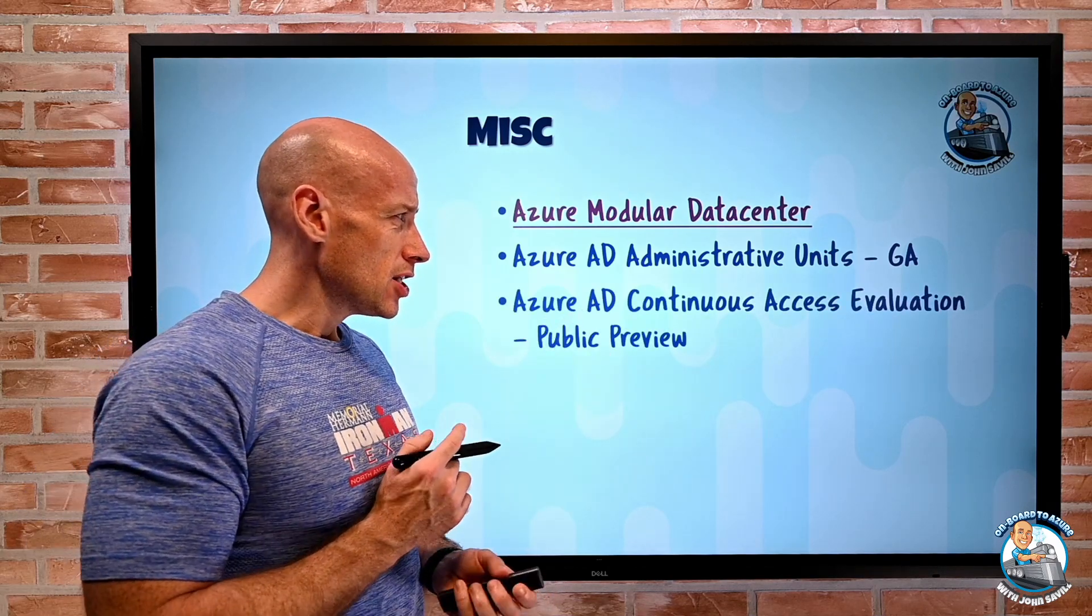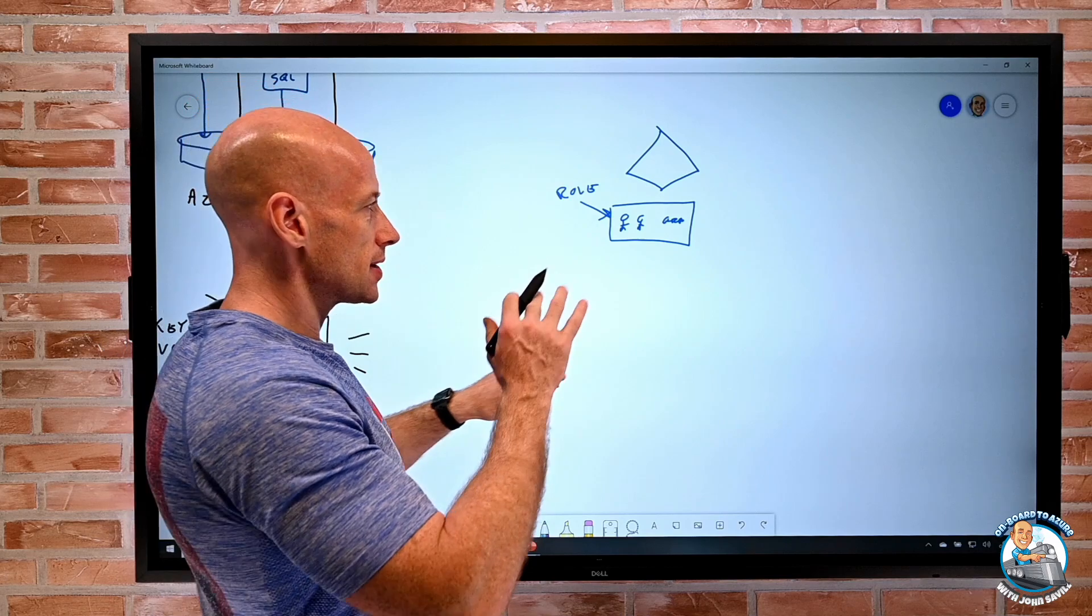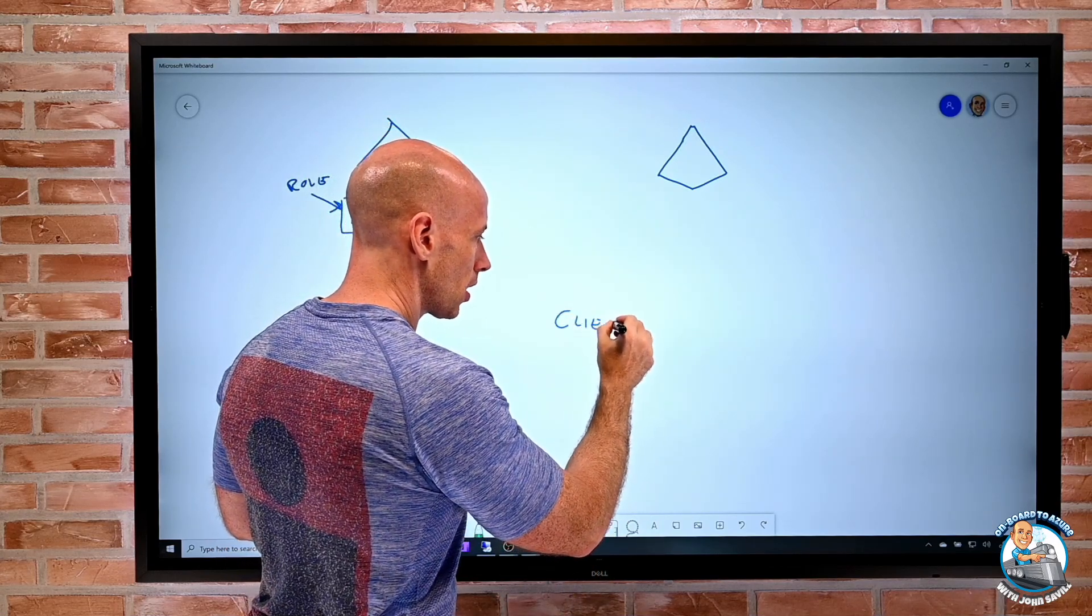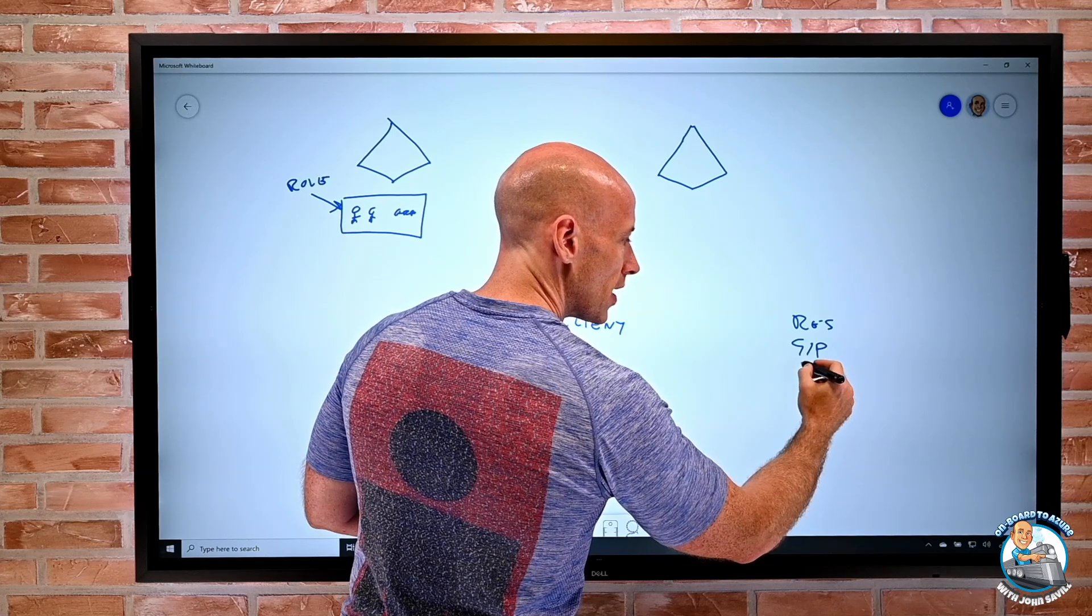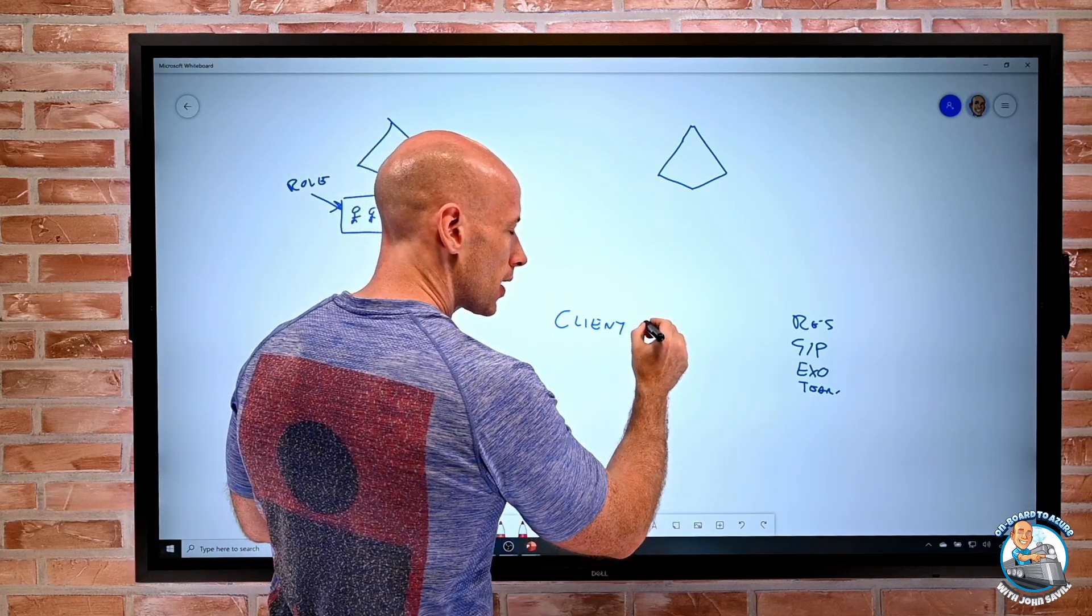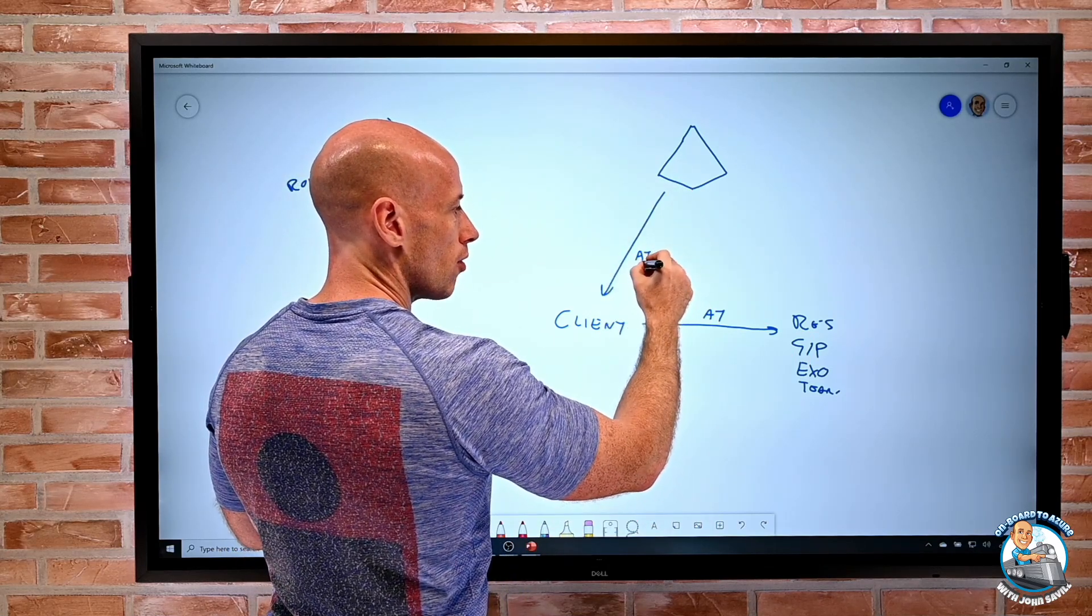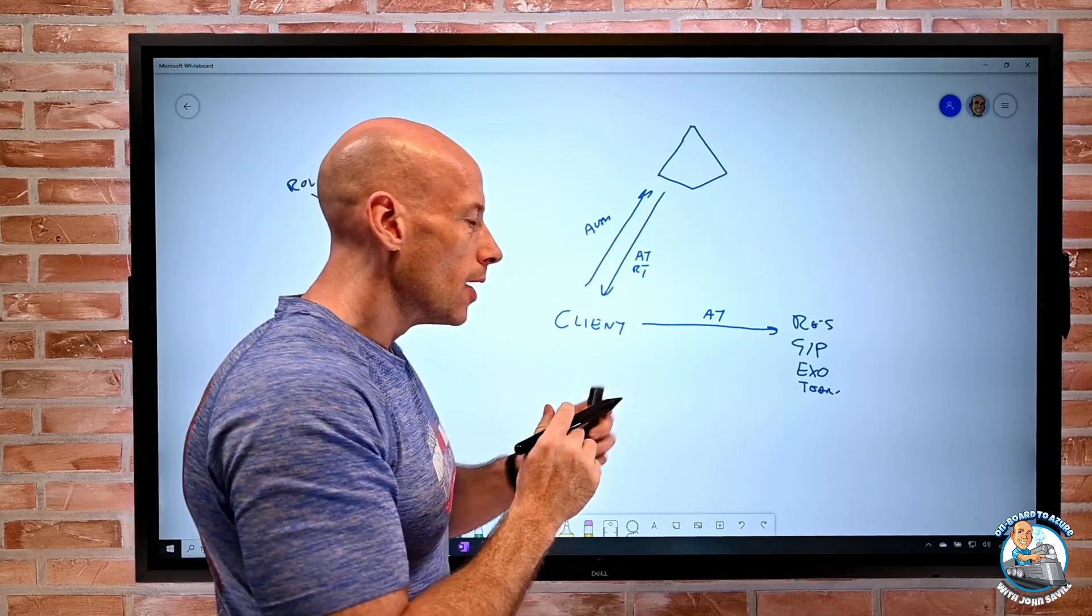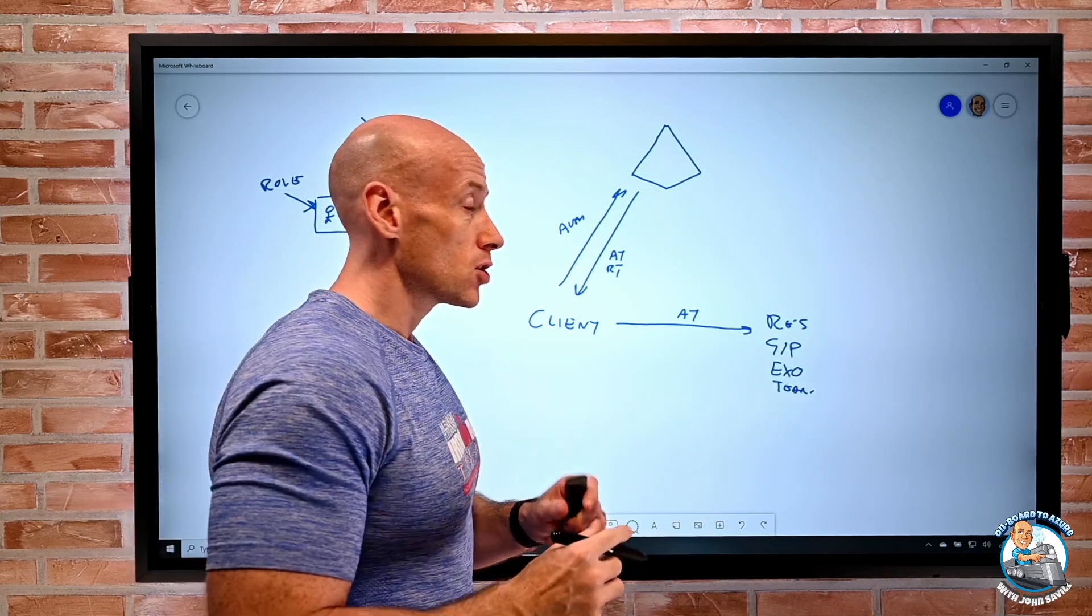And Azure AD Continuous Access Evaluation has now gone public preview. So this is the idea. I can almost use this same picture. So ordinarily, we have our identity provider, Azure AD. We have some kind of client. And then we have some resource. In this case, it could be something like SharePoint or Exchange Online or Teams. And one of the things that happens is I have to give this a token. I give it this access token. And I get the access token along with a refresh token from my identity provider. I have to do an authentication and authorization.